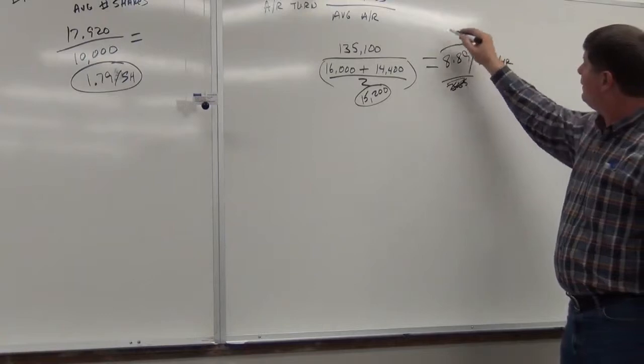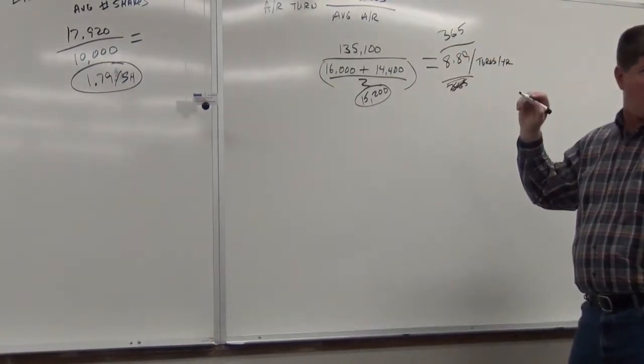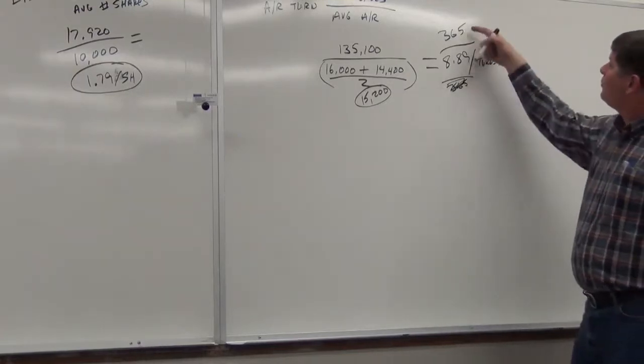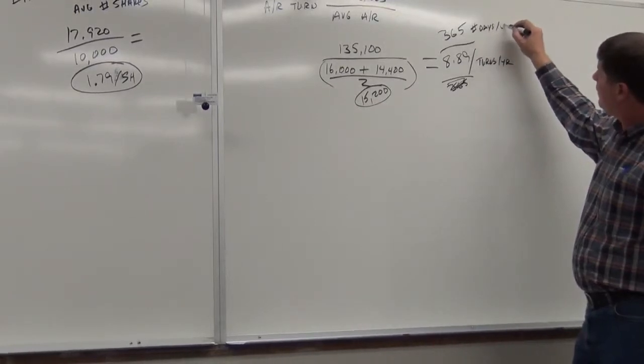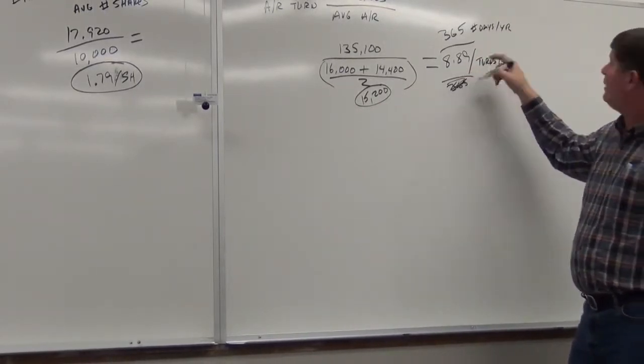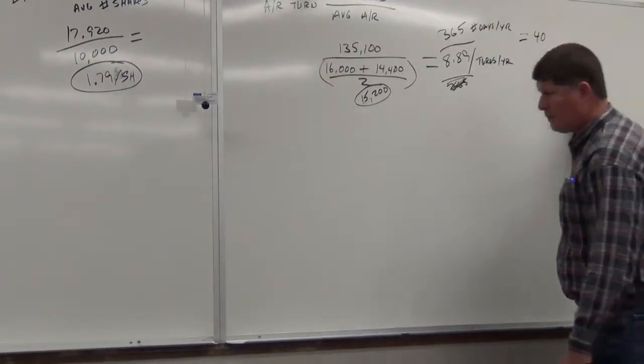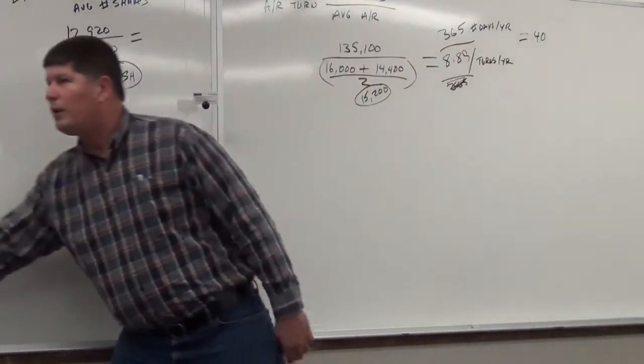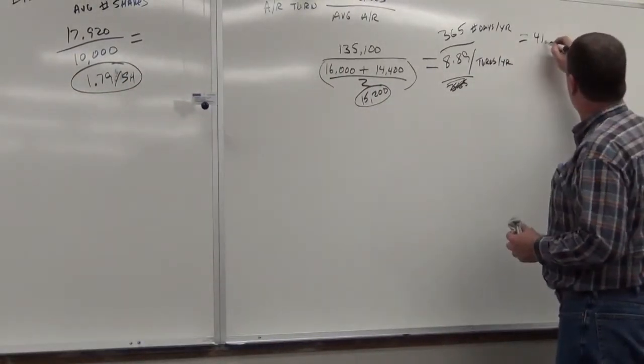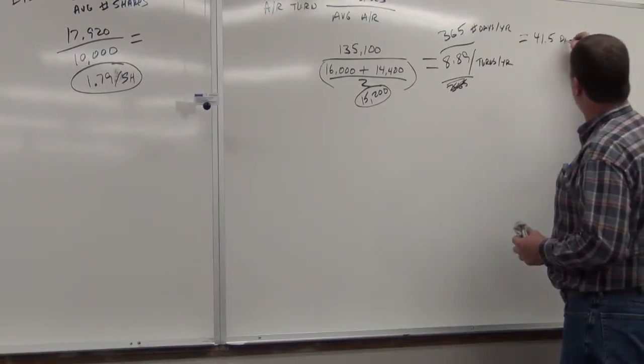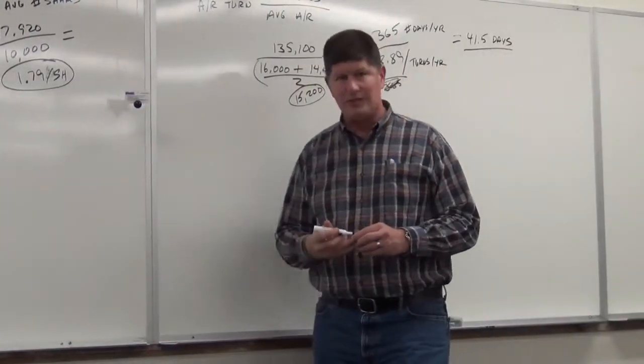$8.89 turns per year. So, how many times did we collect our accounts receivable during the year? On average, nine times, right? So, what's the next step in this? Can I tell how many days that is? What's my average outstanding receivables? The book gives us this. We take the average turns and divide it by what? $365,000. Is that right?